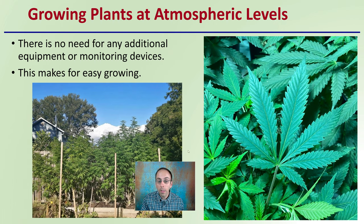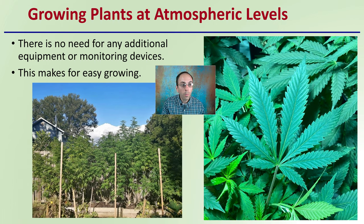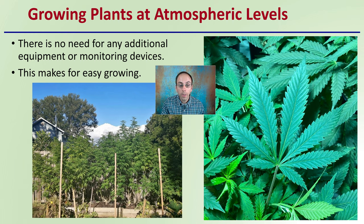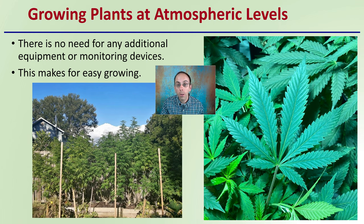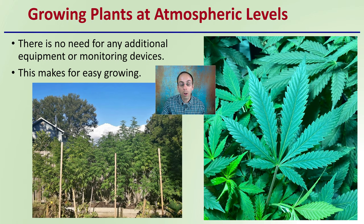When growing plants at these atmospheric levels, there's no need for any additional equipment or monitoring devices. This makes for a very easy grow — this could be an indoor grow, but it could also be an outdoor grow. Probably a little easier outdoors, but even indoors: keep that air moving, keep bringing air in from the outside to ensure your growing environment is at least at atmospheric levels, because extensive plant canopies can cause that to drop below.